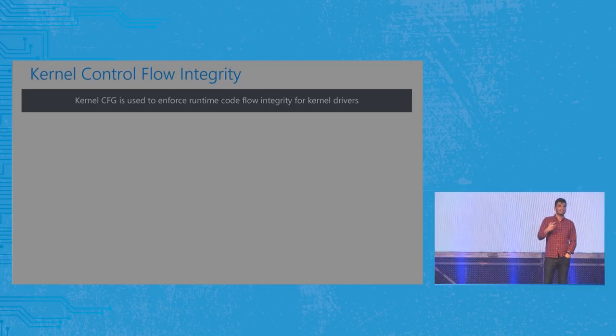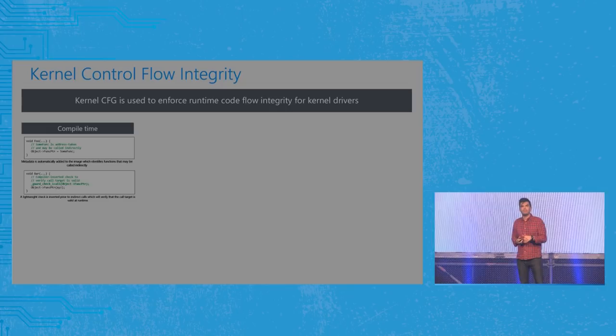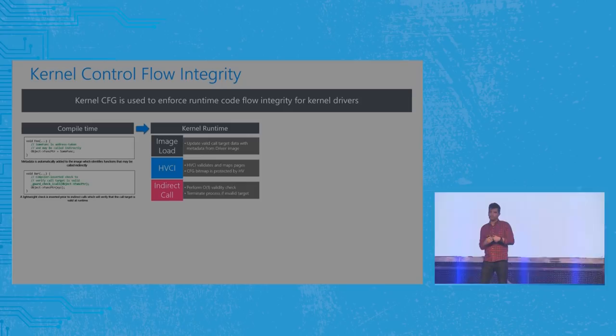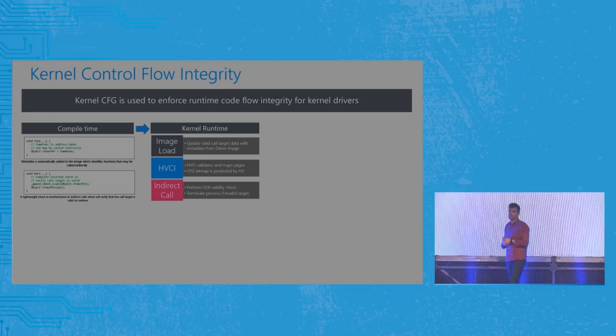It does this by first instrumenting code at compile time. When a developer compiles, we create an allow-list embedded in the binary of all the valid indirections that developer needed to use. When that binary is loaded by the kernel, it grabs that list of all valid indirect control flows and ensures — through CFG checks at runtime — that all indirect control flow events that occur are valid for that binary, matching what the developer predicted.